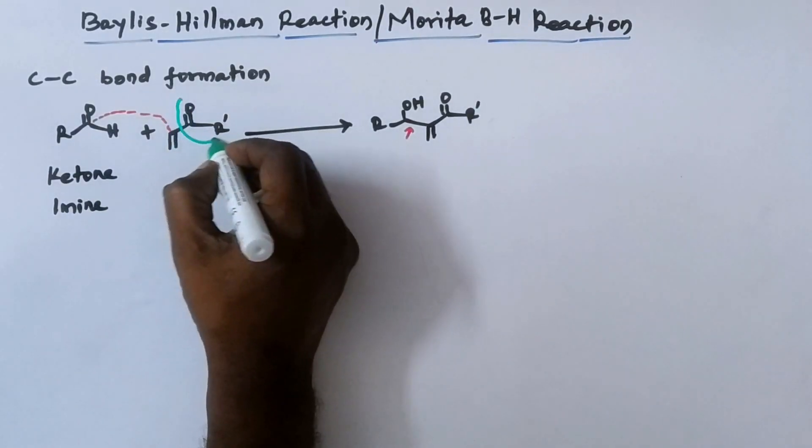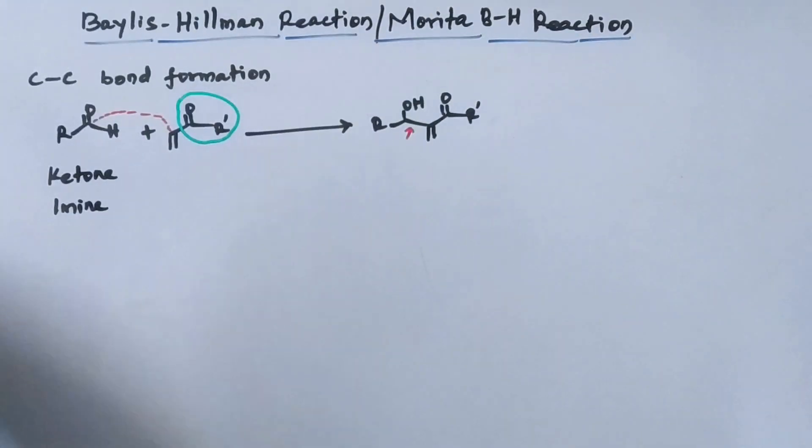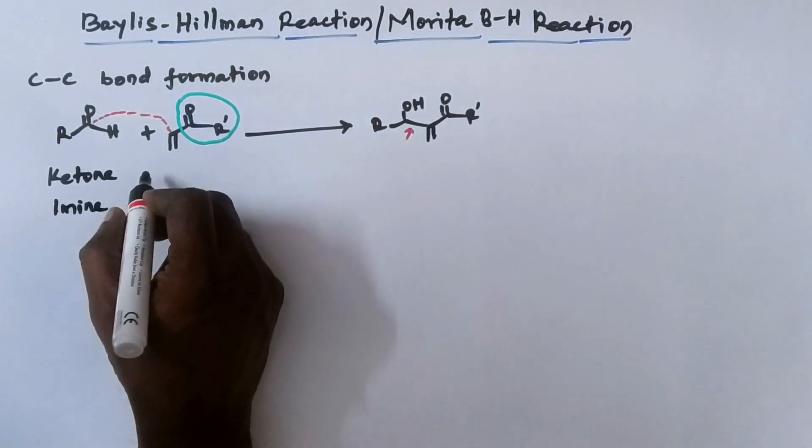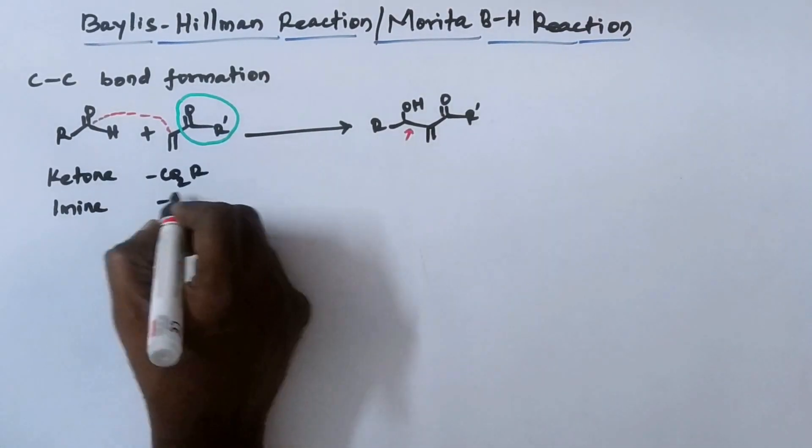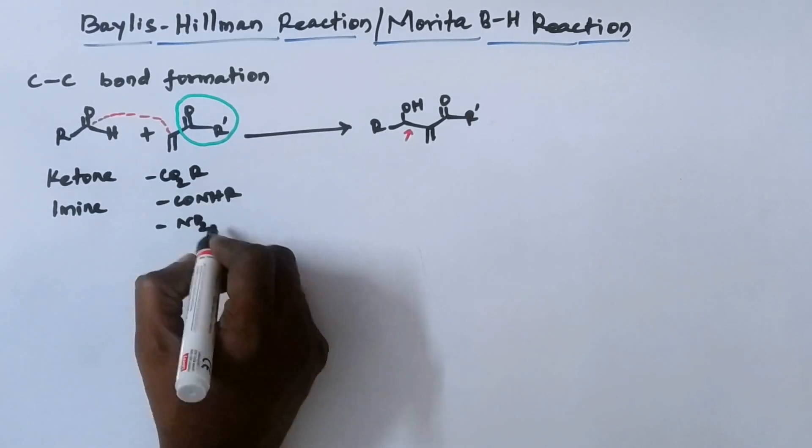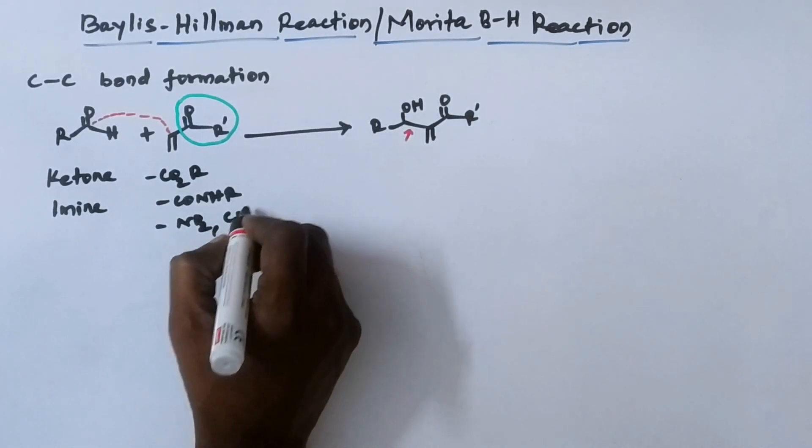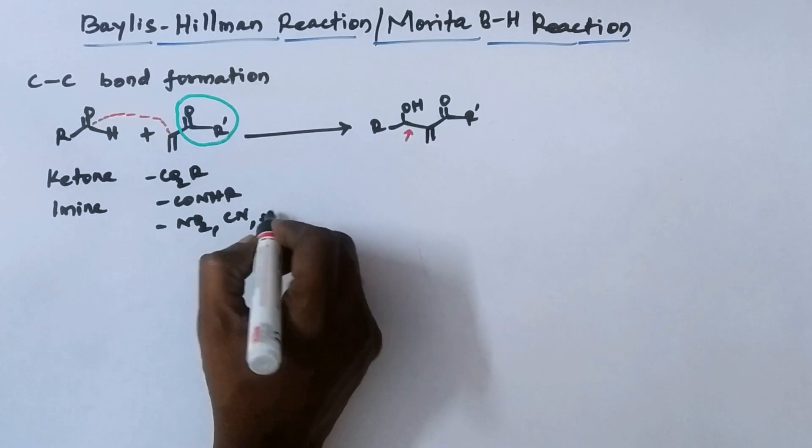Similarly, this electron withdrawing group, what can be used as an electron withdrawing group means we can use ester, we can use amide, nitro, cyano, sulfone, etc.